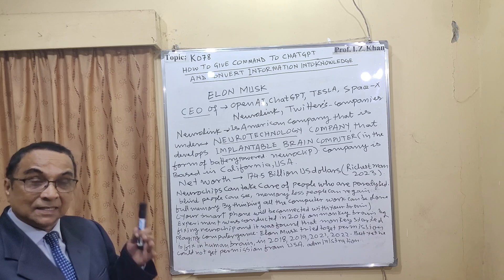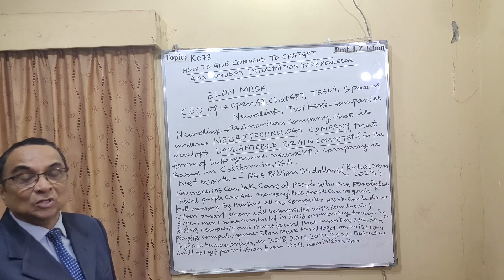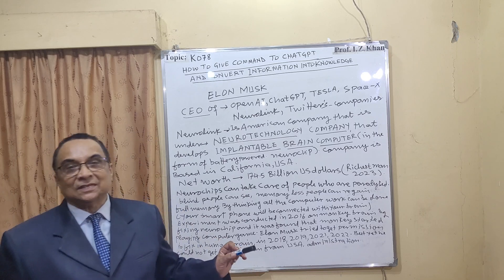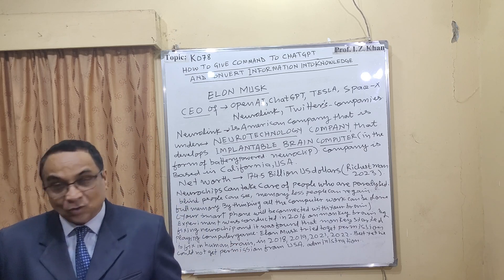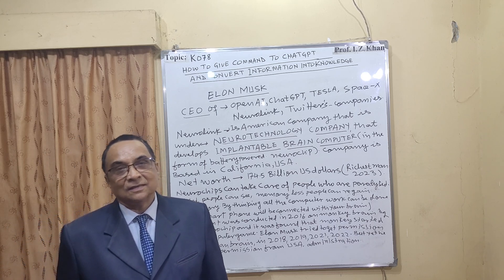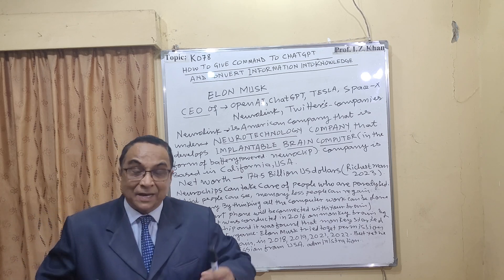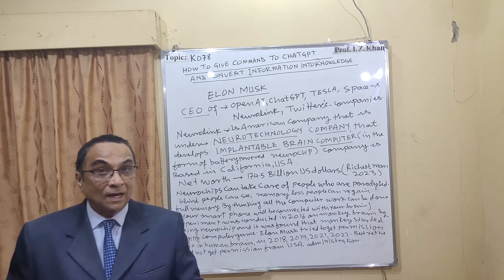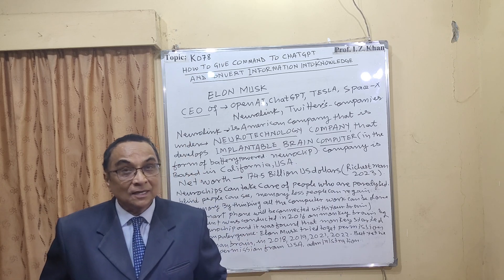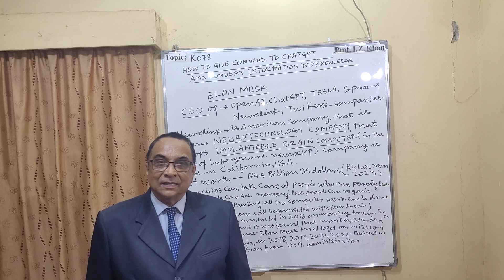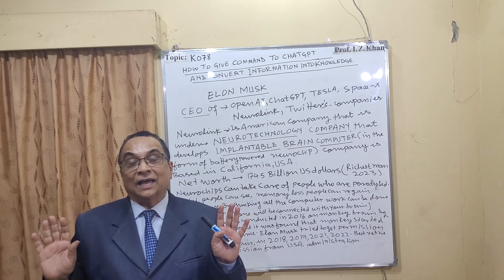The neuro chip has already been developed since 2016–17, and he has been trying to get permission from the US government, but the US government has not given permission till today — he tried in 2019, 2020, 2021, and 2022. They are saying you have to wait. They have not refused but are making their assessment — whether the whole human civilization will become synthetic rather than natural, by putting a neuro chip in the brain to create a superhuman or synthetic human being.